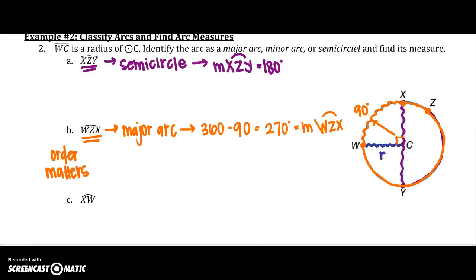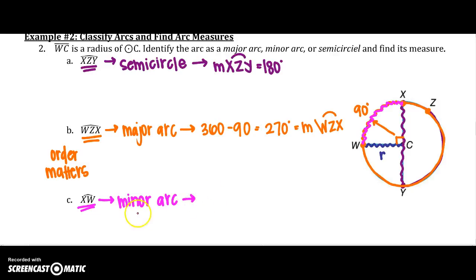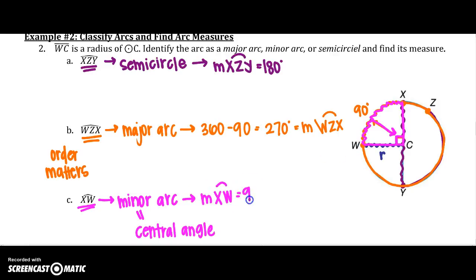And the last one: arc XW. Going from X to W — since it is less than the diameter, this is a minor arc. The minor arc equals the central angle, and that central angle is 90 degrees, so the measure of arc XW is also 90 degrees.